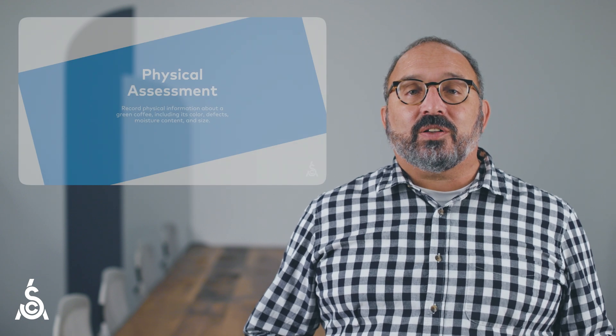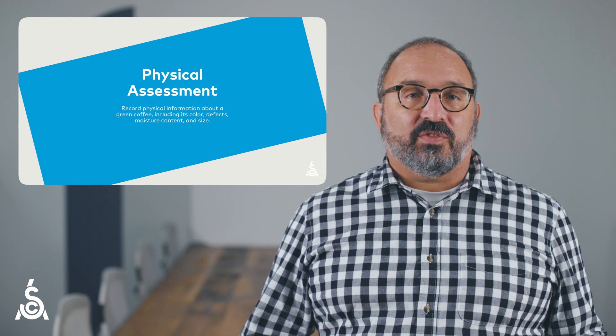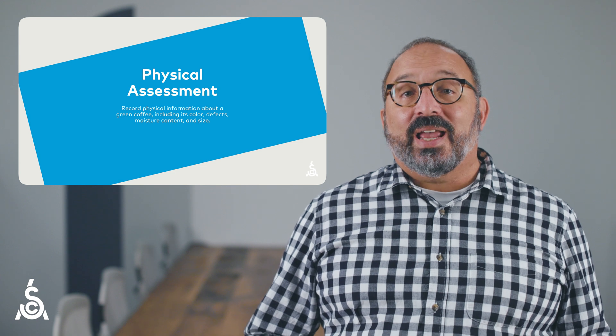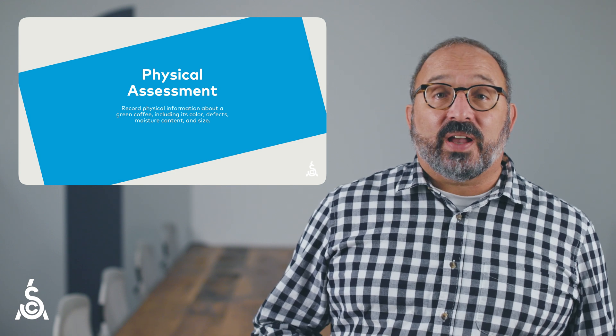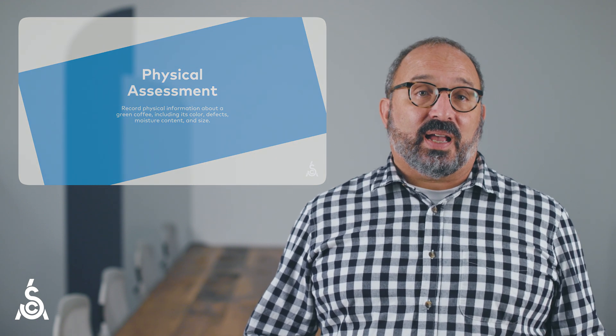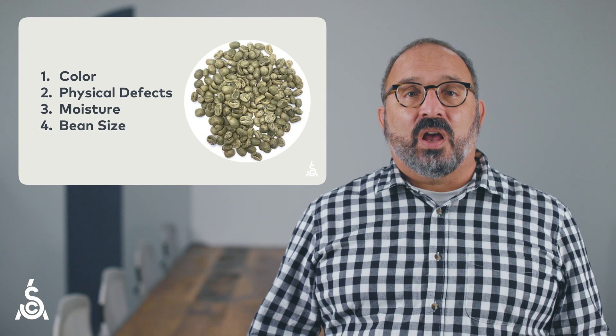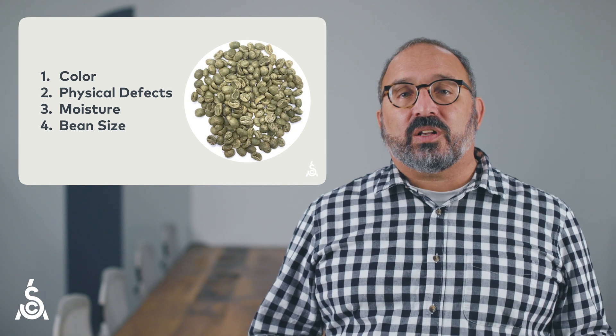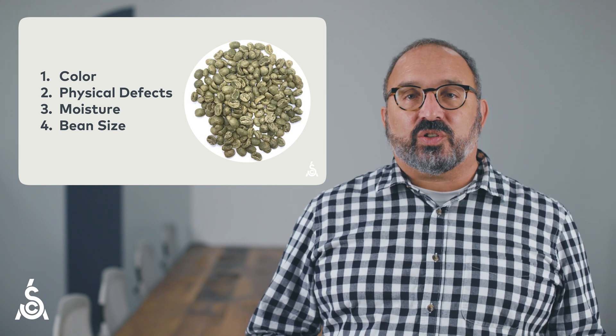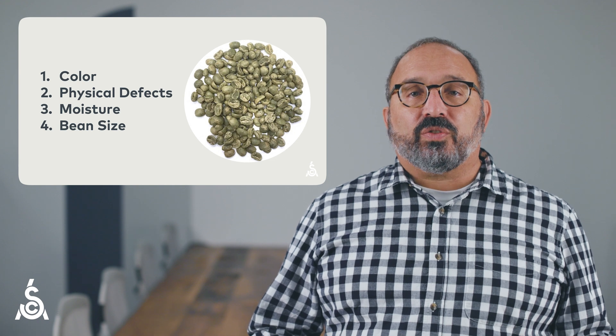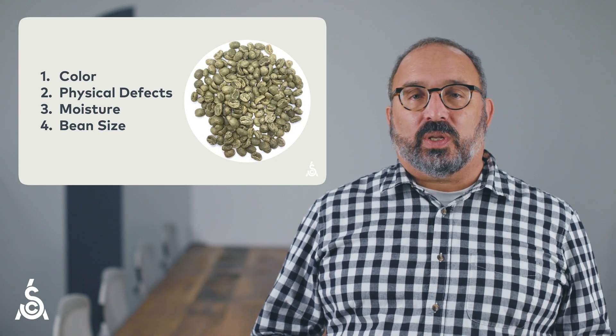In this video, we'll explore the physical assessment of the coffee value assessment. Put simply, the physical assessment records physical information about a green coffee, including its color, physical defects, moisture content, and size. These four elements — color, defect, moisture, and size — are noted independently and are based on traditions and norms in the coffee industry. We'll walk through each of these attributes individually.